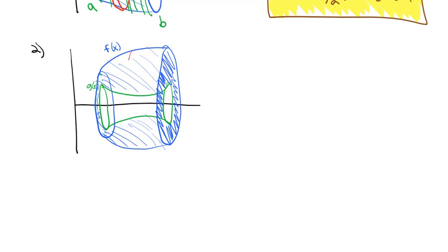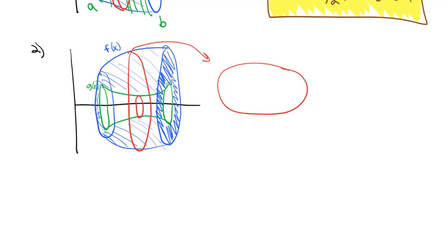If we cut a slice out of this shape, our slice would have a hole in the center. It still has some width to it — we'll call that dx. Now we've got this hole in the center, and it looks less like a disk and more like a washer. So we'll call this the washer method.